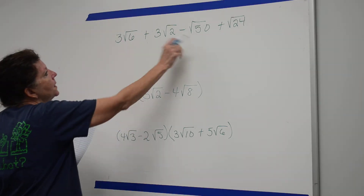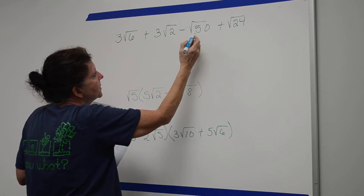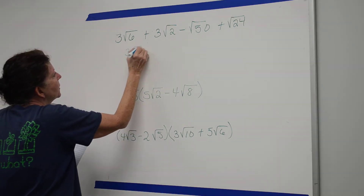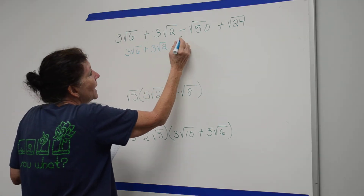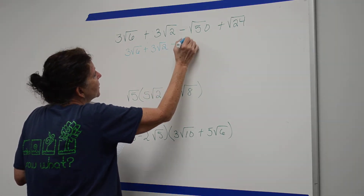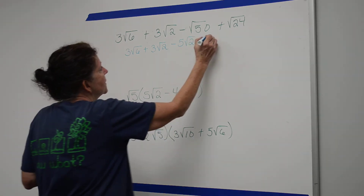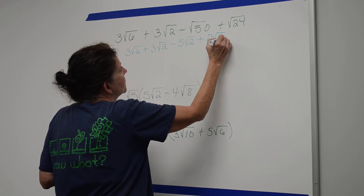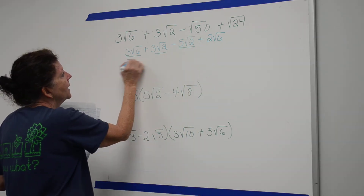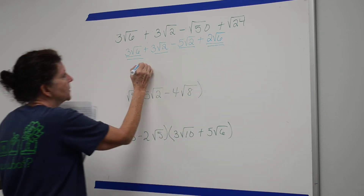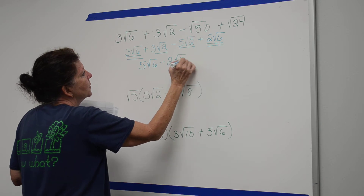On this top problem, I can break down 50 into 25 times 2, giving 3 on the square root of 6, plus 3 on the square root of 2, minus 5 on the square root of 2. I can break 24 into 4 times 6, which is 2 on the square root of 6. Matching terms combine: 3 plus 2 on the square root of 6 and 3 minus 5 on the square root of 2, giving 5 on the square root of 6 minus 2 on the square root of 2.